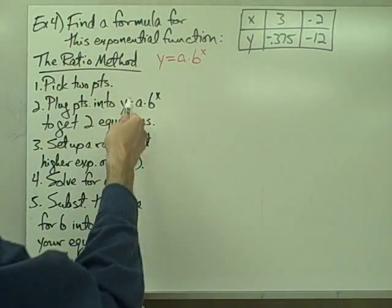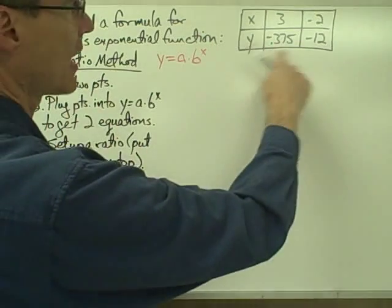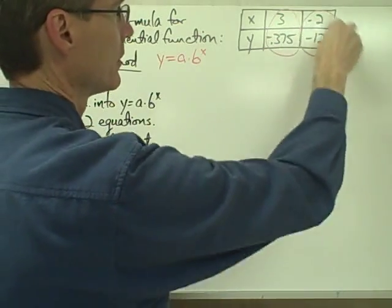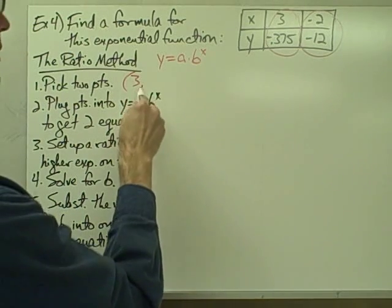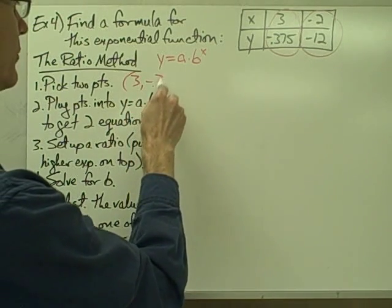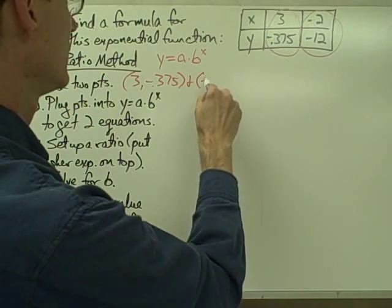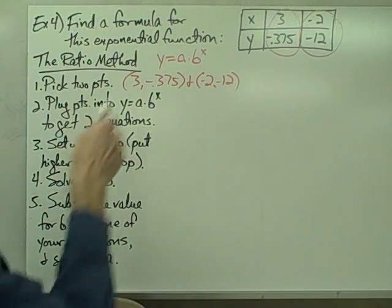So the ratio method goes like this. From your data set, you pick two points. Well, since I've only got two points here, this point and this point, then it's easy for me to pick two points. My two points are going to be 3, negative 0.375, and negative 2, negative 12. Those are my two points.